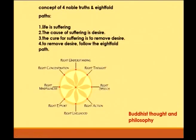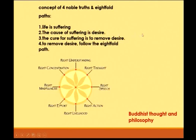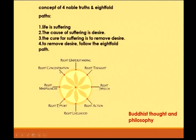The Buddhist philosophy consists of four noble truths and the eightfold path. The four noble truths are: life is suffering; the cause of suffering is desire; the cure for suffering is to remove desire; and to remove desire one has to follow the eightfold path. The eightfold path is: right understanding, right thought, right speech, right action, right livelihood, right effort, right mindfulness, and right concentration.